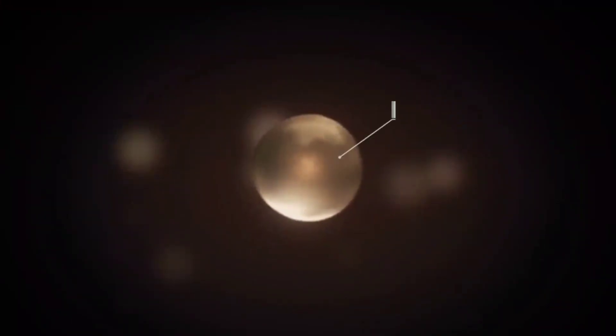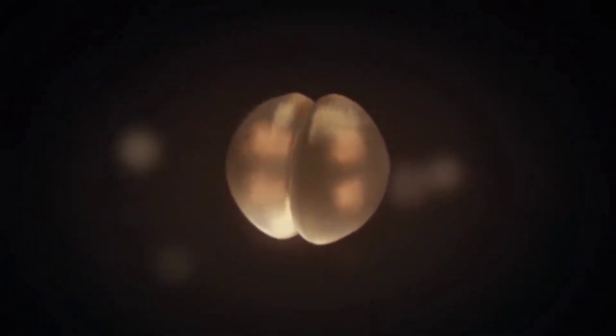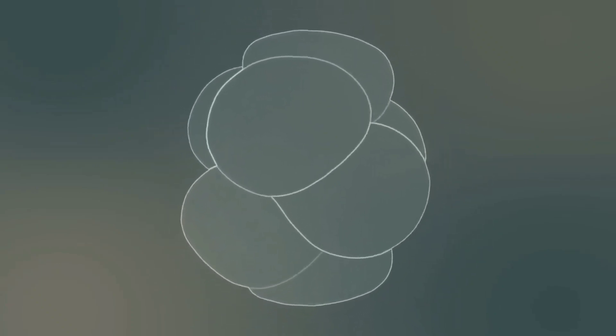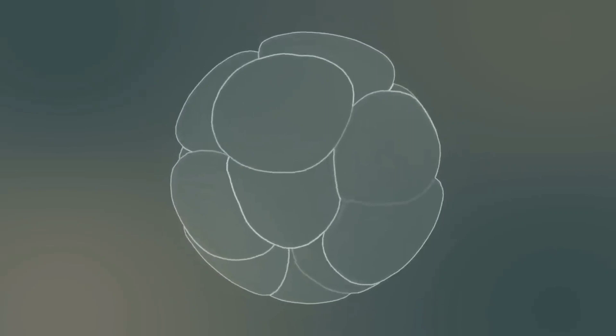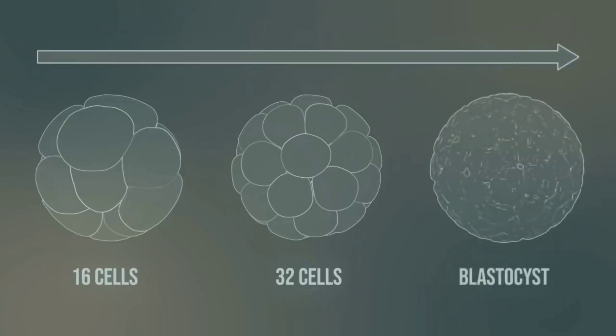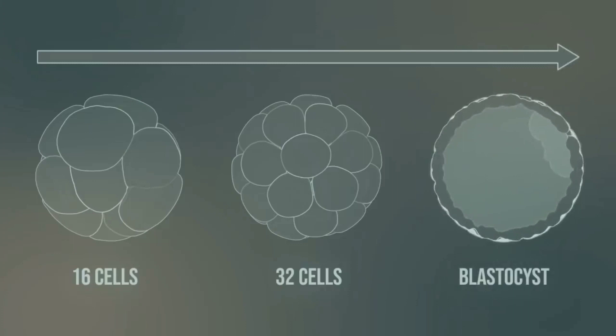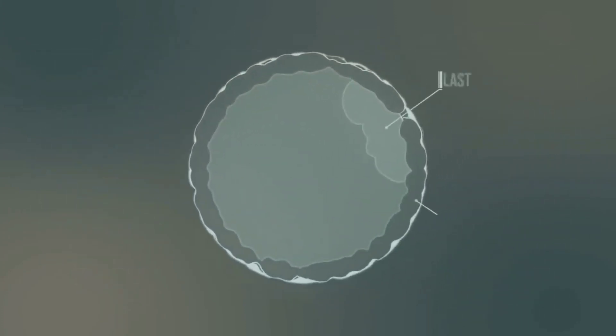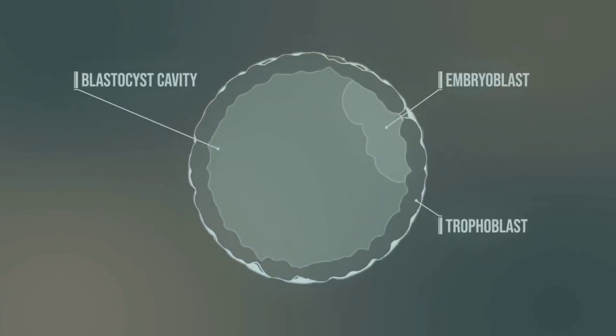Now the cell is called a zygote, which is the very first cell of the new human being. The stage of cleavage begins — the cell continues to divide: two cells, then four, then eight. At the 16- to 32-cell stage, we speak of a morula, since the shape resembles a mulberry. The cells are still enclosed by the zona pellucida, so after each division the number of cells increases while the size of each cell diminishes. Finally, the blastocyst is formed, consisting of a fluid-filled cavity, the embryoblast, and the trophoblast. The embryoblast is the initial structure of the new human being, whereas the trophoblast is the origin of the placenta and membranes.